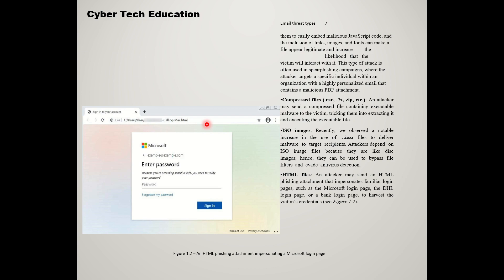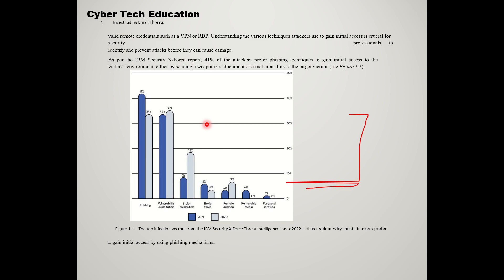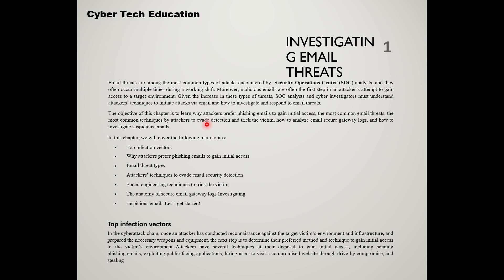So this is how I explained the things. We have discussed certain topics: top infection vectors, why attackers basically prefer email to gain initial access, and email types and threats. In the upcoming videos we will be having attackers' techniques to avoid email security detection, followed by those three topics. This is all about today's video. Thanks for your time, folks.